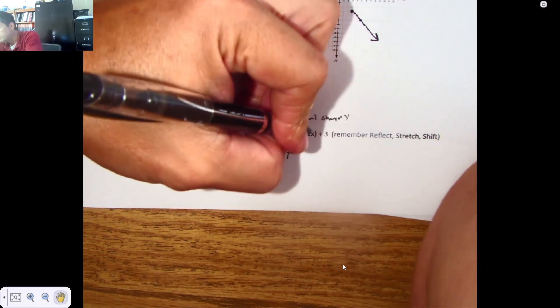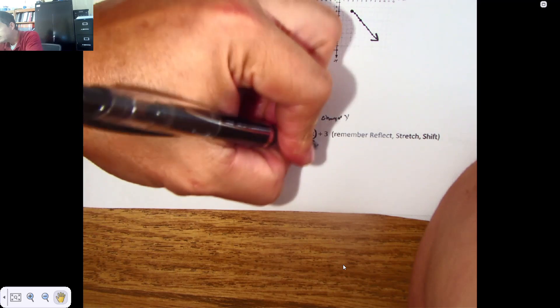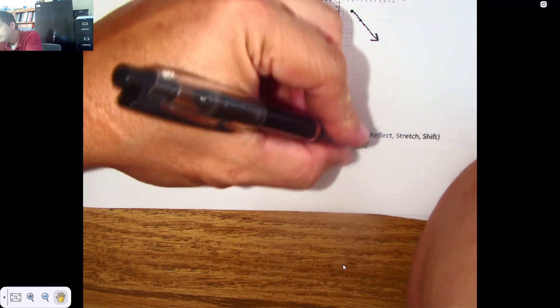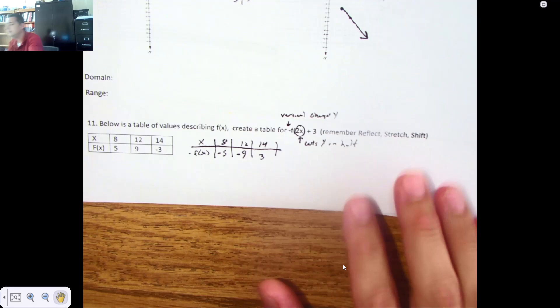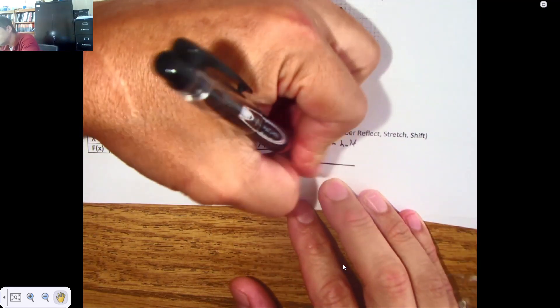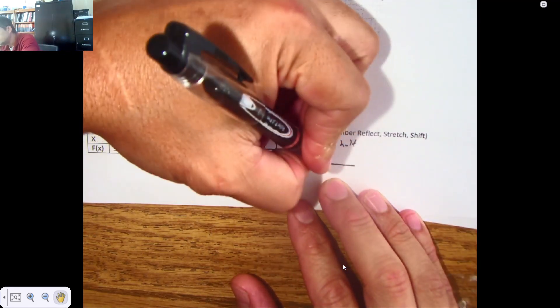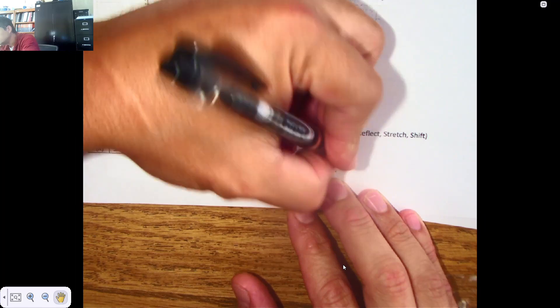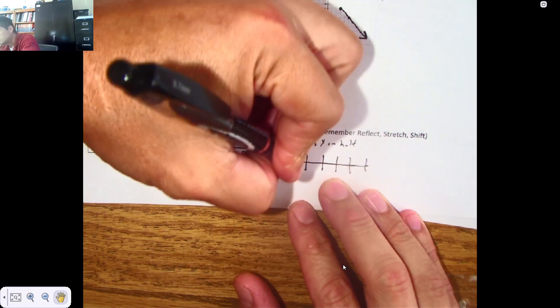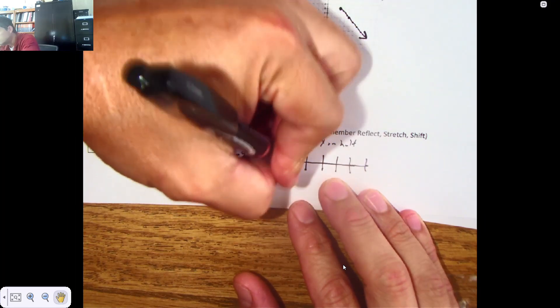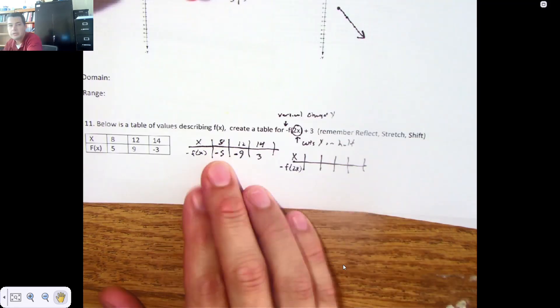Now I'm going to handle this stretch that cuts x in half. It's the reciprocal of whatever number you see. So we have a new table.